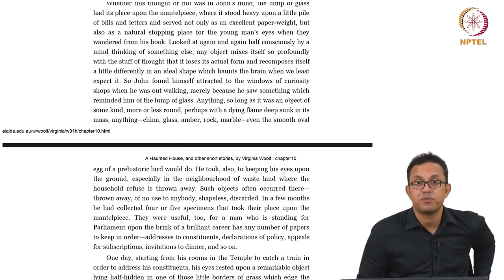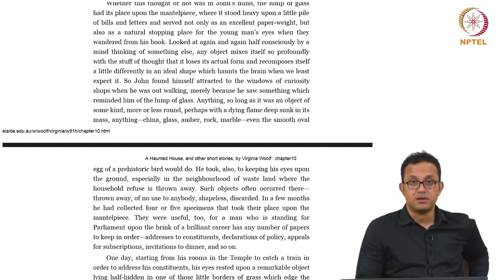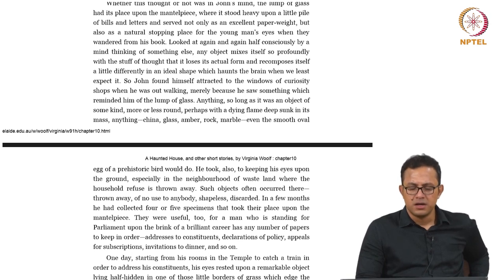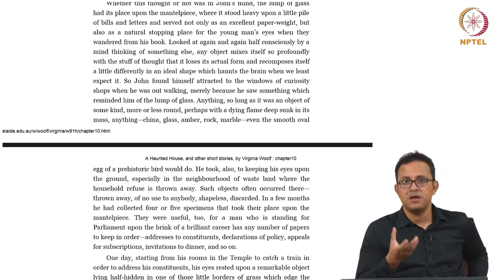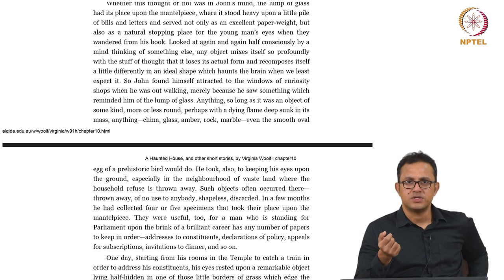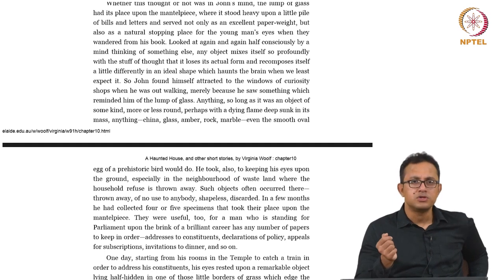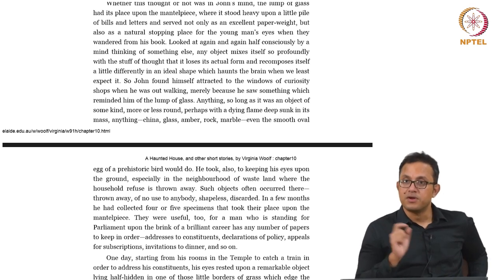In a few months he had collected four or five specimens that took their place upon the mantelpiece. They were useful too, for a man standing for parliament upon the brink of a brilliant career, who has any number of papers to keep in order — addresses to constituents, declarations of policy, appeals for subscriptions, invitations to dinner and so on. We can see a parody has been formed: the narrator says these are valuable objects because they can be used as paperweights for the other valuable objects — invitations for dinners, declarations of policies. For any man aiming to make it big in parliament, collecting solid objects from trash is helpful because they serve as paperweights.